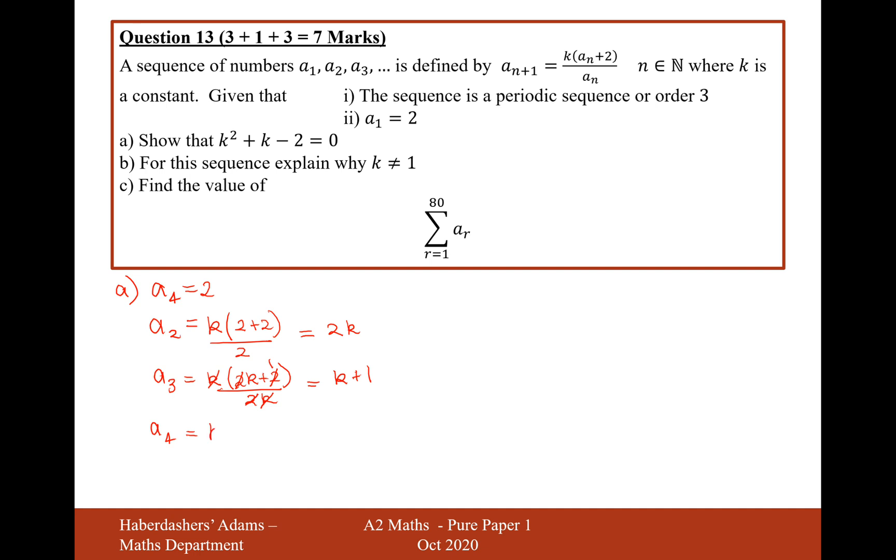And then back to a4 now, so substituting in k + 1, it's going to be k brackets k + 1 plus 2 close brackets over k + 1. And this should equal 2, because we get to a4 and a4 equals 2. So therefore, if we now rearrange this, it's going to be k brackets k + 3 equals 2k + 2. Let's expand the brackets: k² + 3k equals 2k + 2. So therefore, k² + k - 2 = 0. There we are, that's the answer for that question.